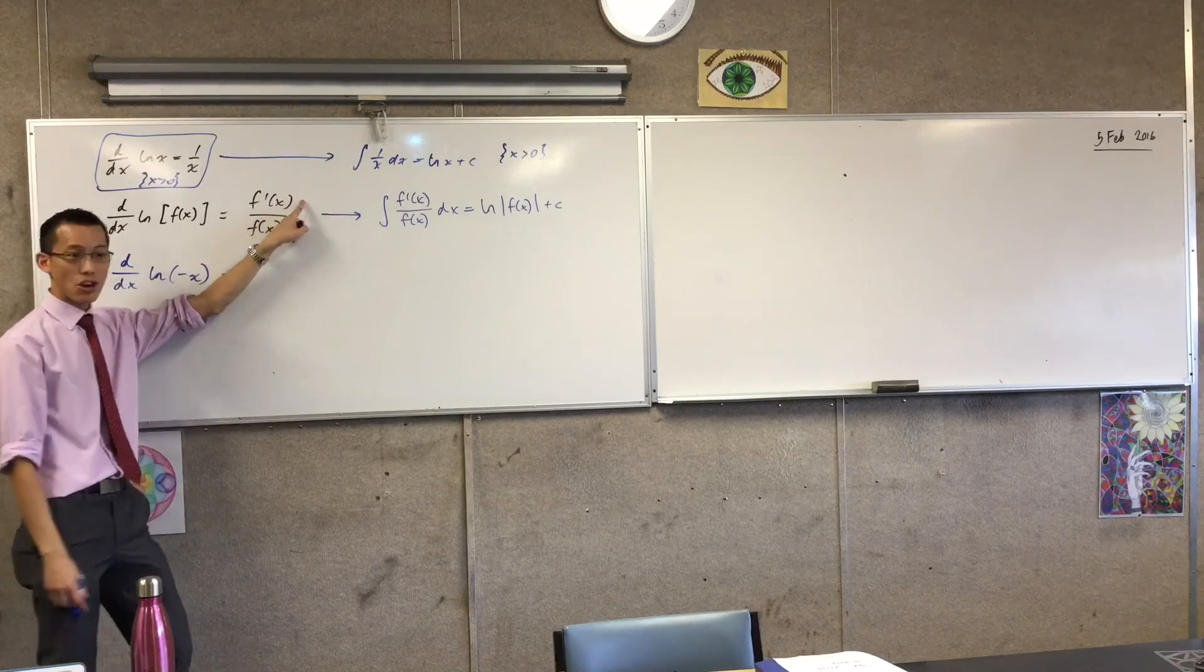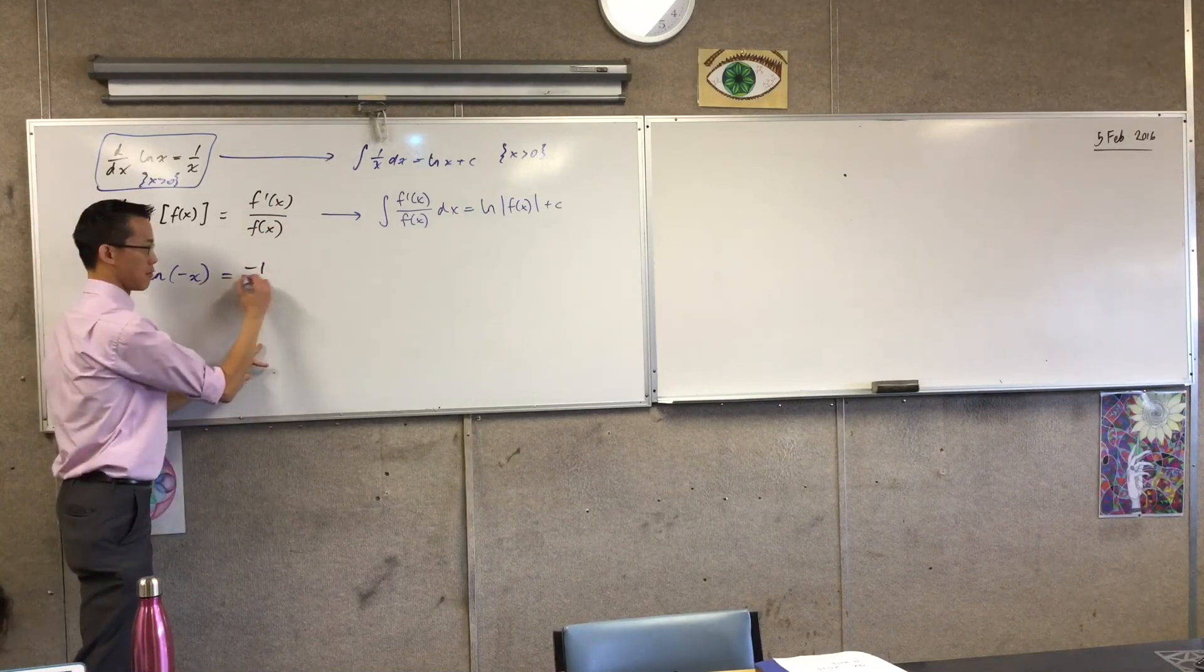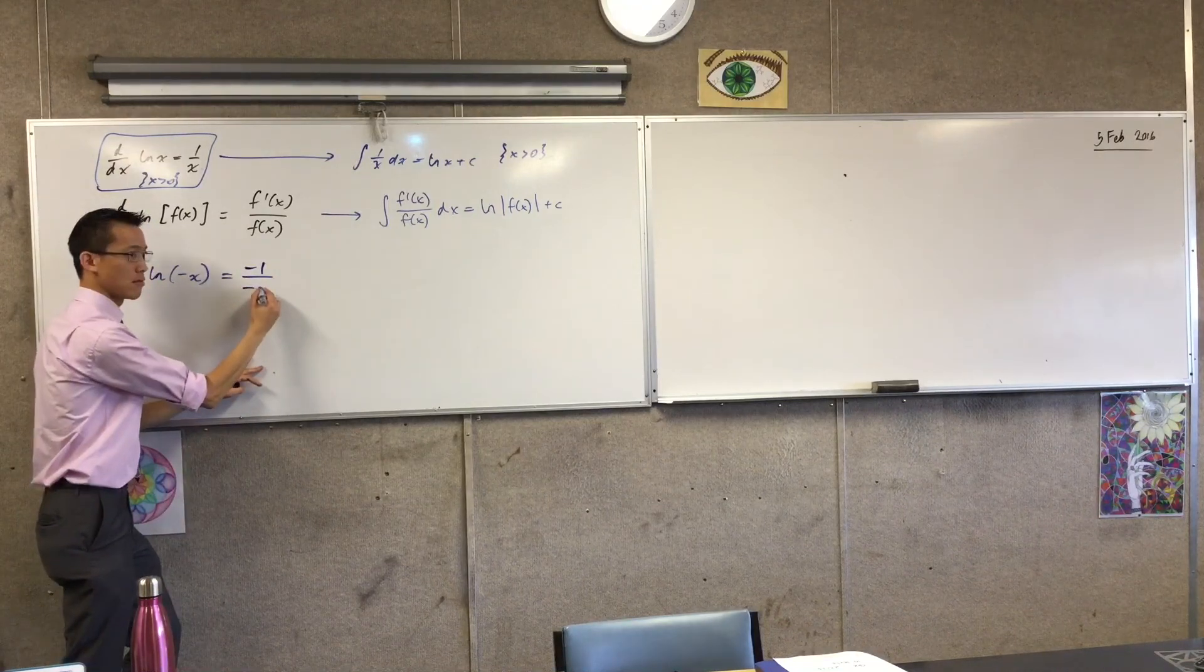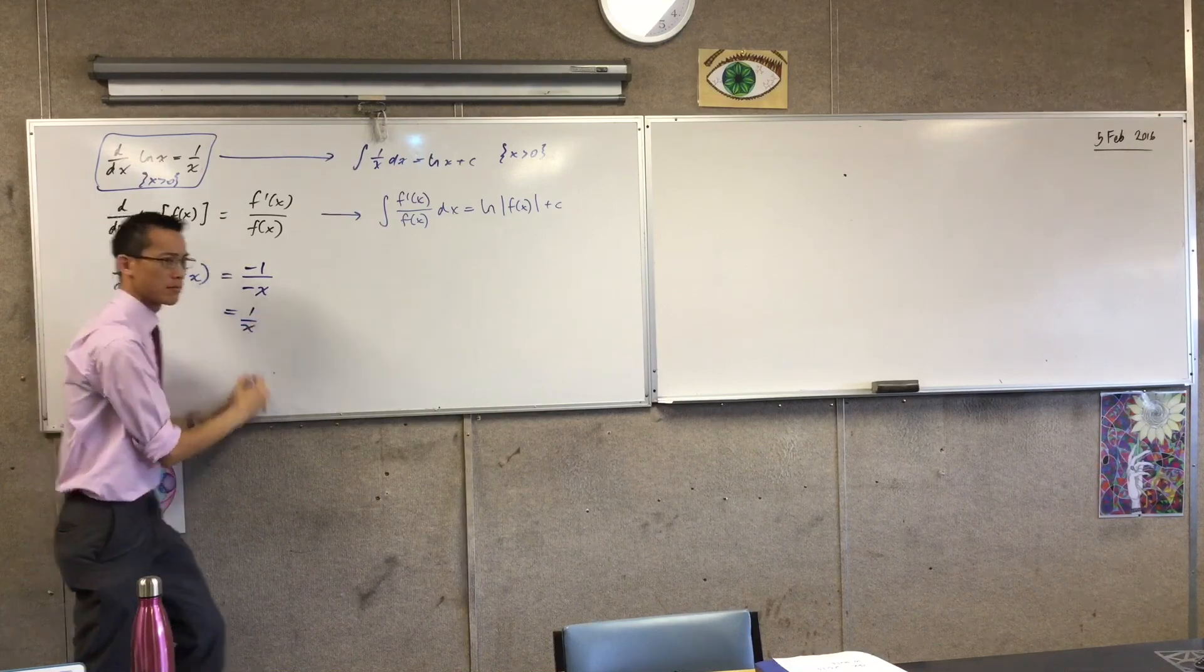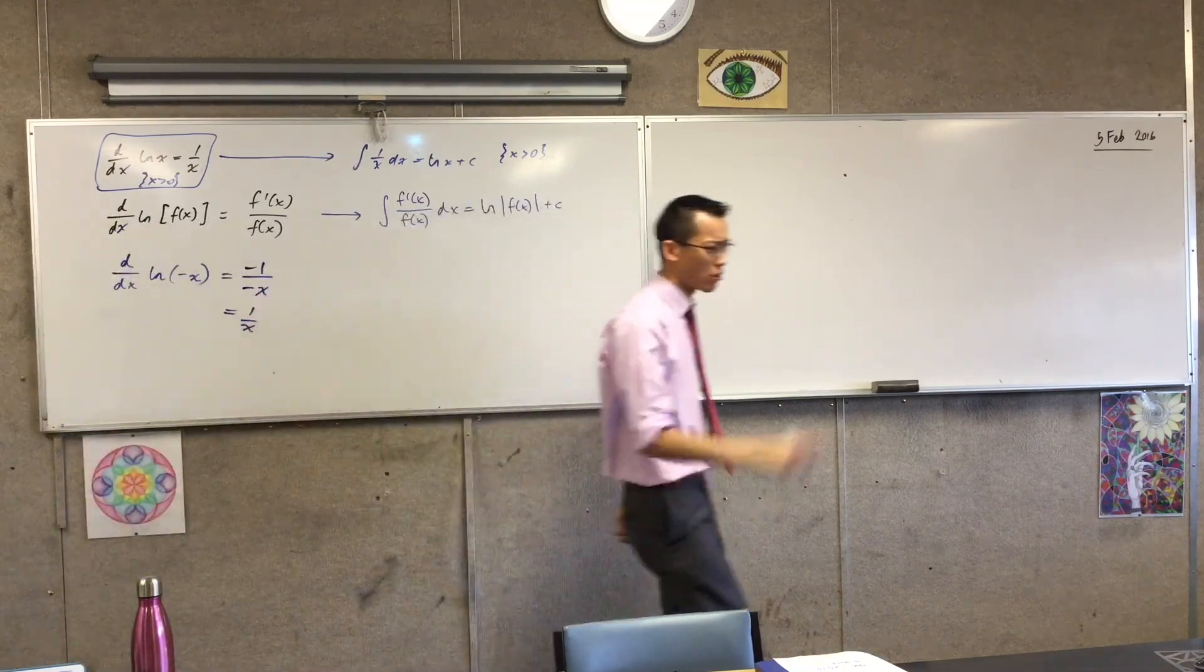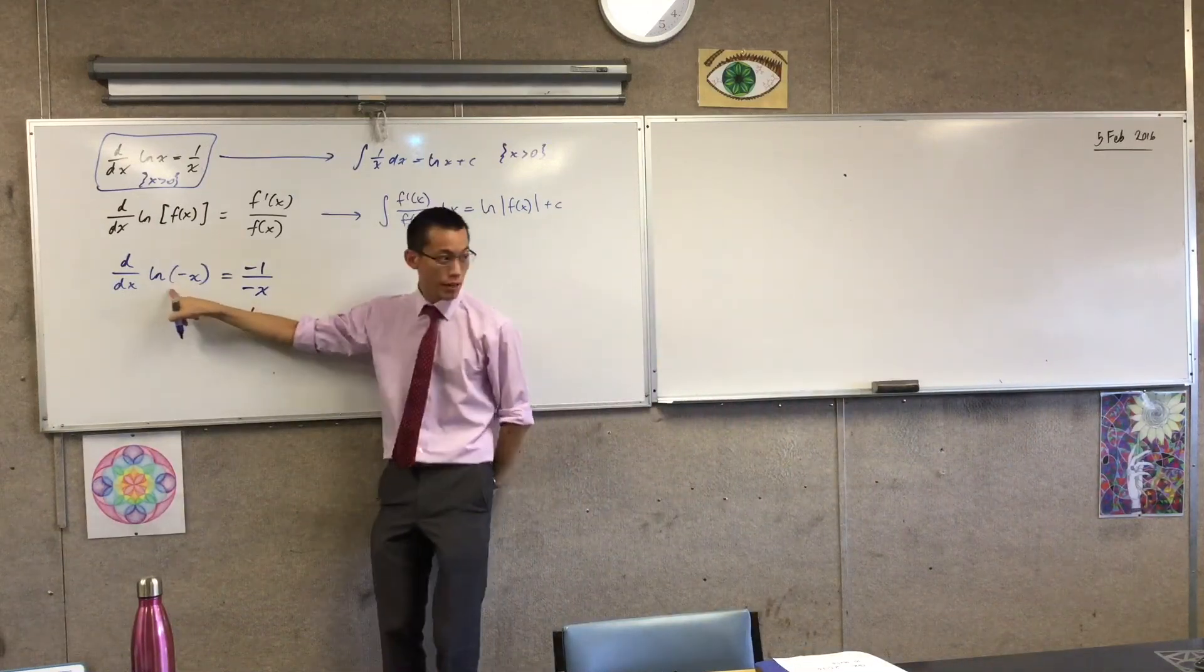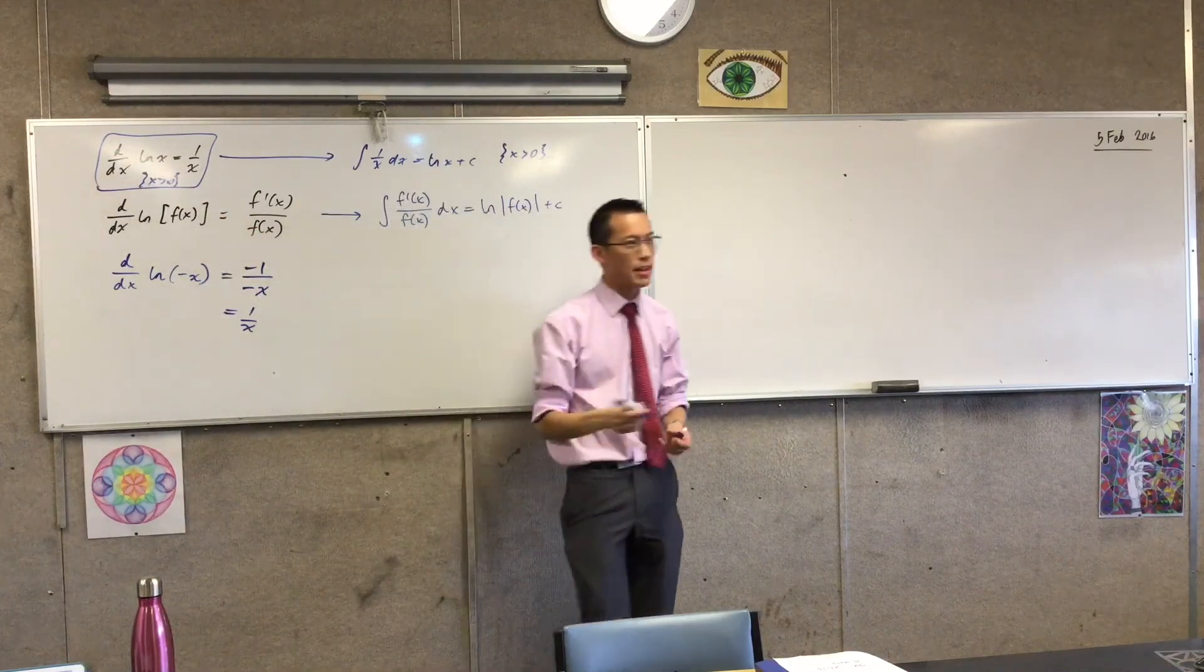This is a chain rule, so I should get f dash on f. What's f dash? Minus. What's f? Minus. Minus f. Hold on. Completely different function. This, do you agree, is a completely different function to this. But somehow, by going through this process, I get the same thing.